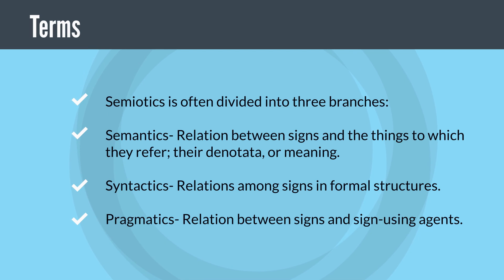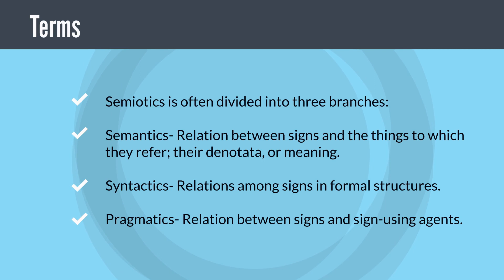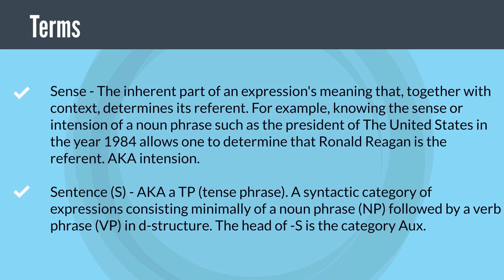Semiotics is often divided into three branches. Semantics: relation between signs and the things to which they refer — their denotata — or meaning. Syntactics: relations among signs in formal structures. Pragmatics: relation between signs and sign-using agents.